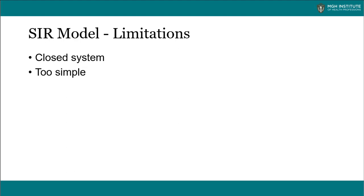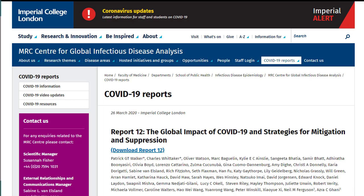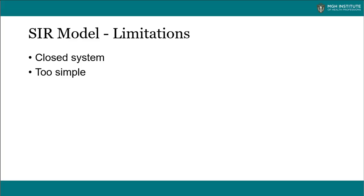SIR models have limitations. First, they're closed systems — they don't account for people coming into the population, and they don't account for deaths either. Deaths are counted in the recovered proportion, even though those individuals are simply no longer infectious. In this way, they're too simple. There are researchers that produce much more sophisticated and accurate estimates of epidemic size and peak timing, such as those at the Center for Global Infectious Disease Analysis at Imperial College London.